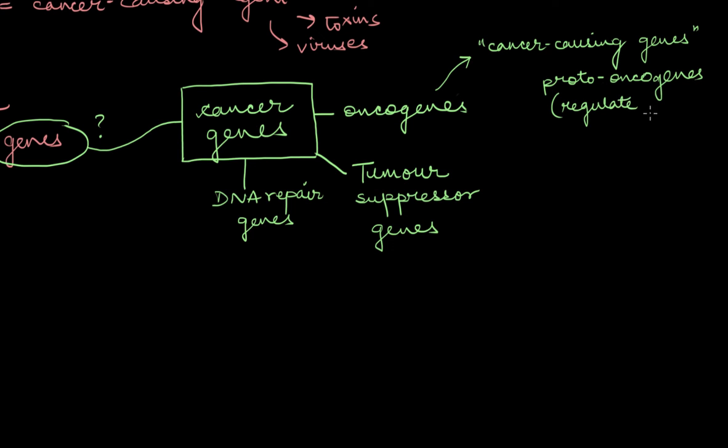So when they get mutated or activated, then they turn into these oncogenes. Now the thing about oncogenes is that they ruin the controlled growth of cells, so the cells now tend to multiply forever. Think of it as a stuck accelerator of a car—it only speeds up, continues to speed up, and never slows down.